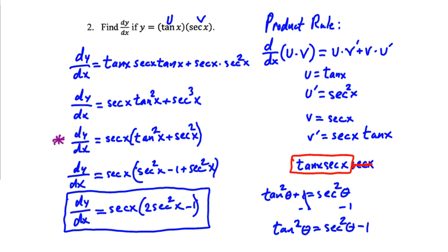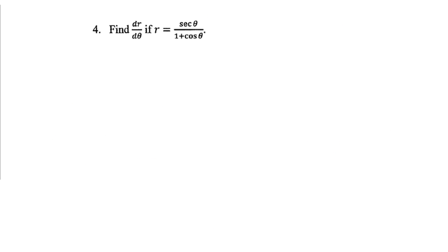Now, problem 4: find dr/dθ if r equals secant θ over 1 plus cosine θ. Here we have a quotient of two functions, so we're going to use what we call the quotient rule.